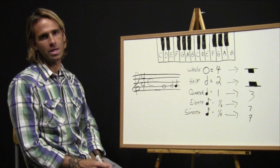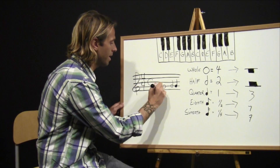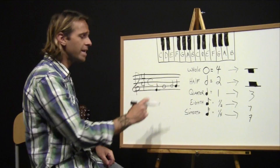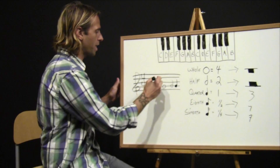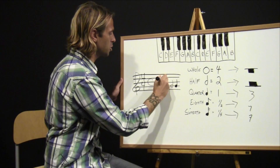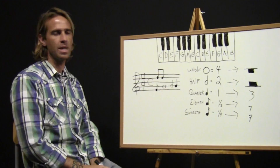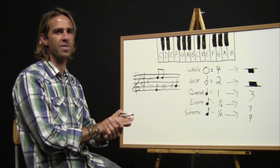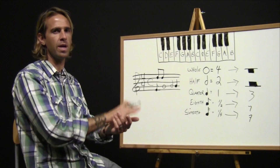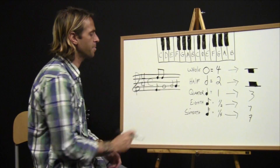The next one is the eighth note, which is worth half of a quarter note. It has a flag on it to indicate that it's an eighth note. Sometimes you'll see eighth notes beamed together — instead of two separate flags, you connect them with a beam. Each eighth note is worth half a beat, so if the beat is going 'one-and two-and,' those are where the eighth notes come into play.